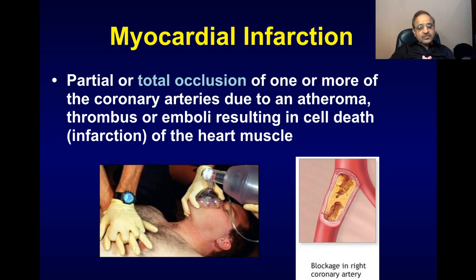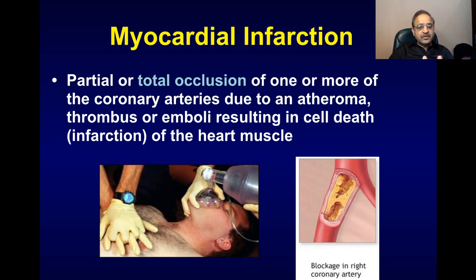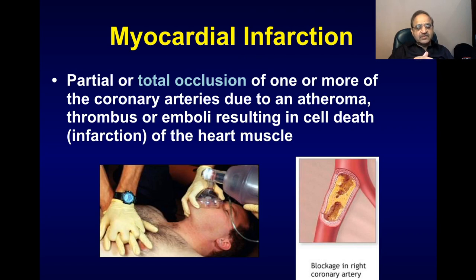In acute myocardial infarction there is total occlusion of one or more coronary arteries due to rupture of the atheromatous plaque and formation of a red thrombus. If this situation is not treated within the next one to two hours, there is death of myocardial cells which leads to subsequent heart failure in these patients.